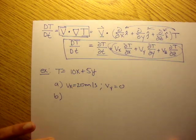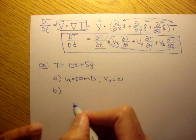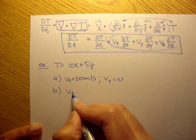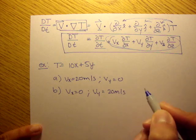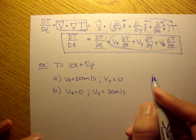And b, vertically only. So, Vx is 0, and Vy at 20 meters per second.